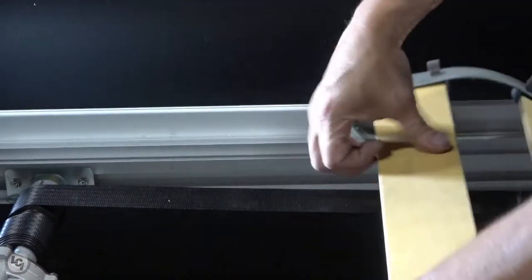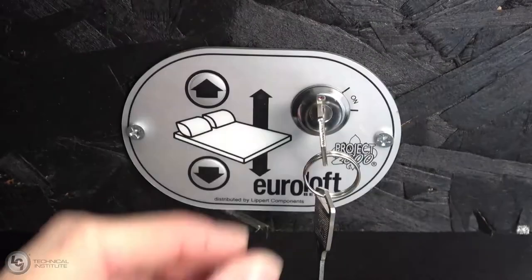You will need to first remove the mattress support slats to gain access to the motor. The brackets for these are clipped into the bed frame and can be popped out.